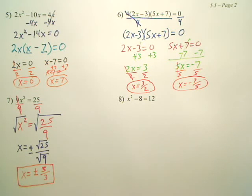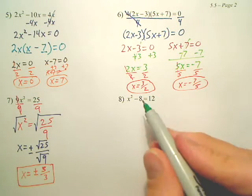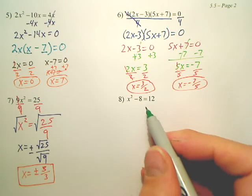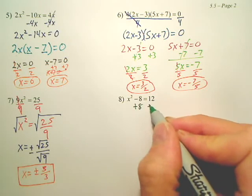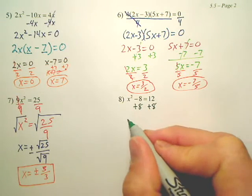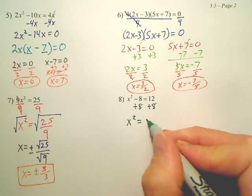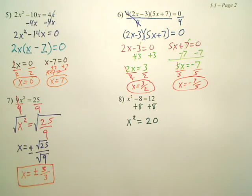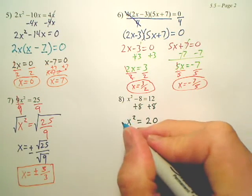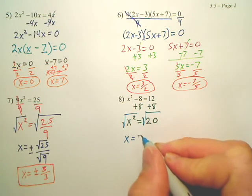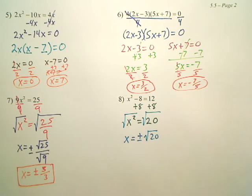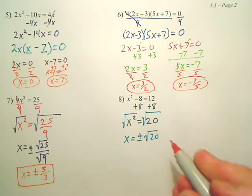Number 8. What we're going to do is we want to get the x squared by itself. To get the x squared by itself, what do we have to do? Add the 8 over. So, we now have x squared equals 20. So, what's our next step to get rid of the squared? We're going to square root both sides. We now have x equals, don't forget the plus or minus, the square root of 20.